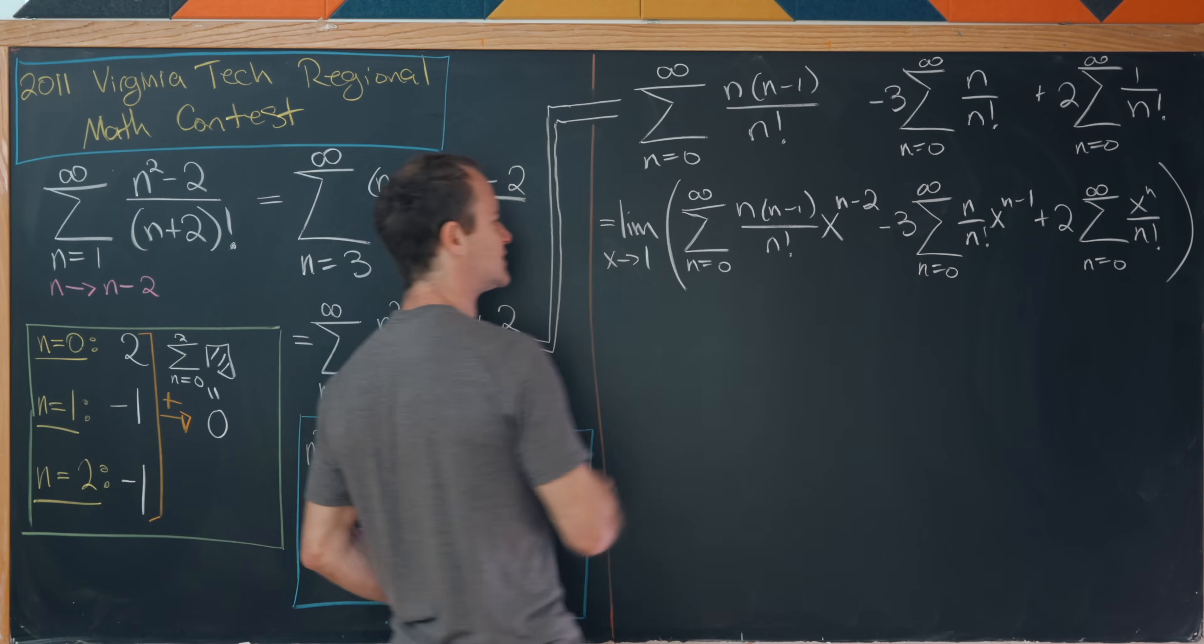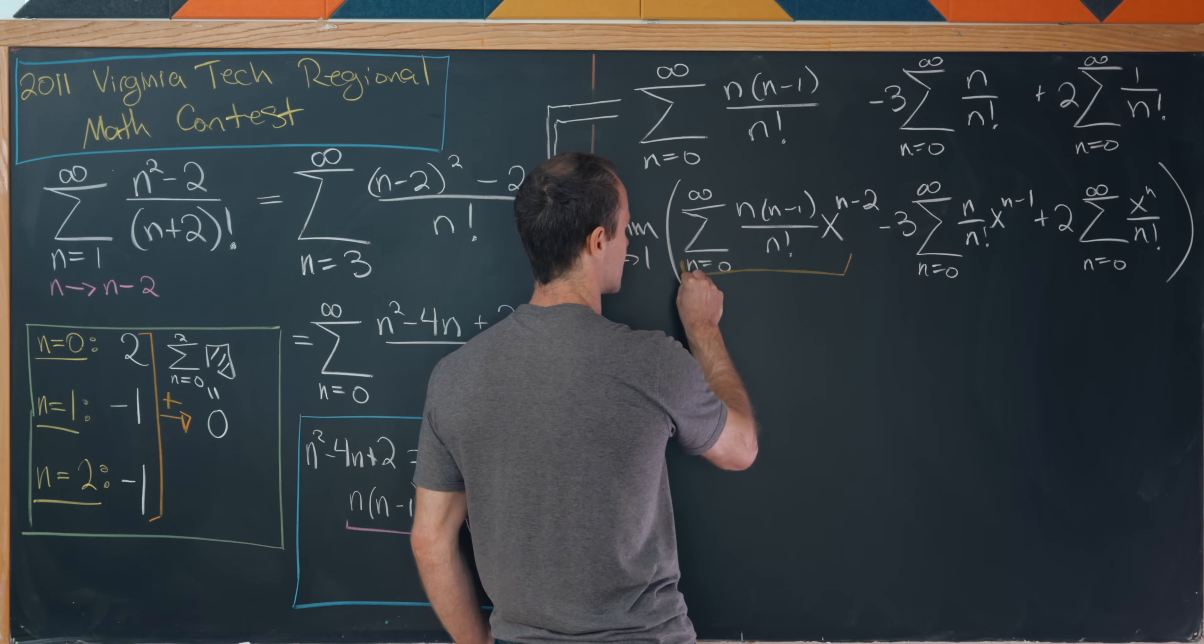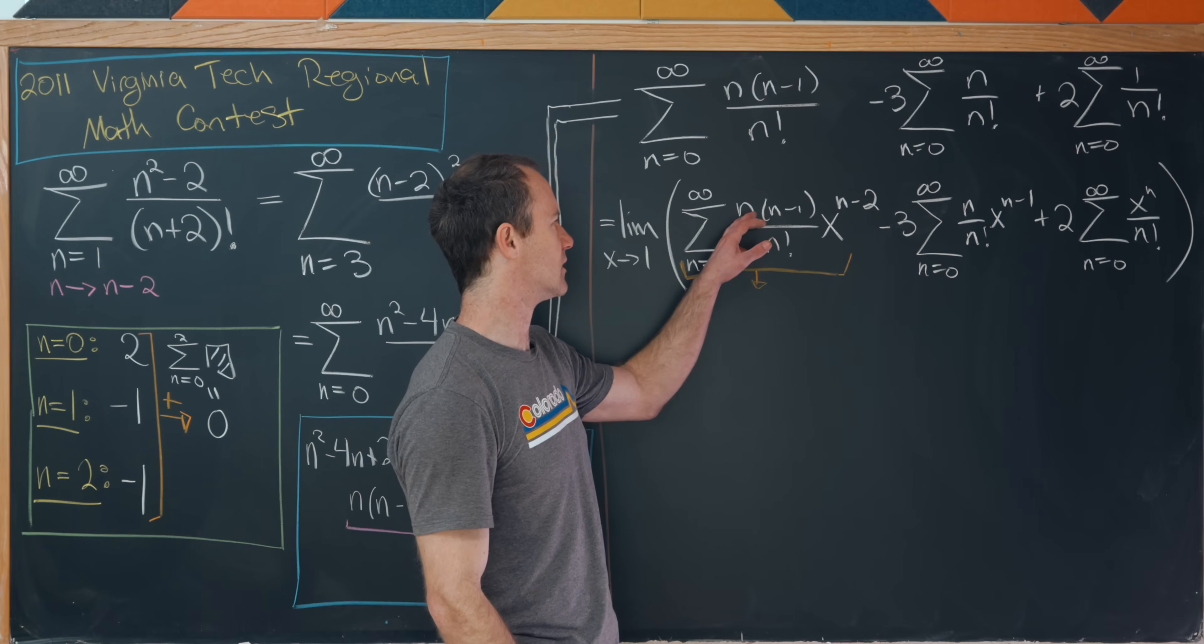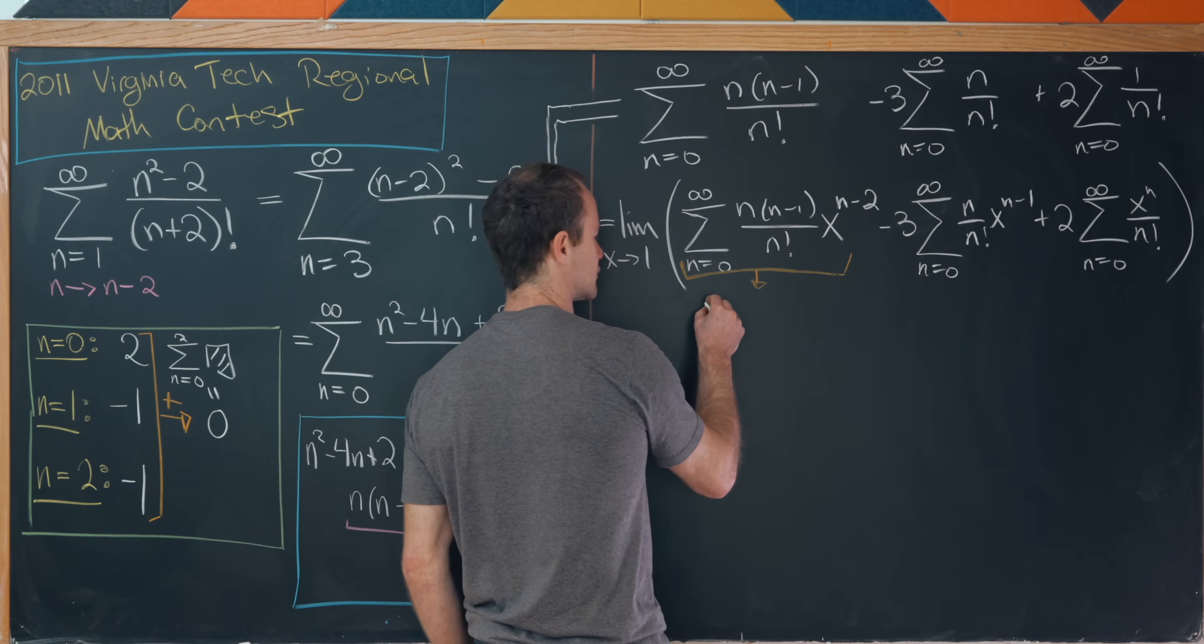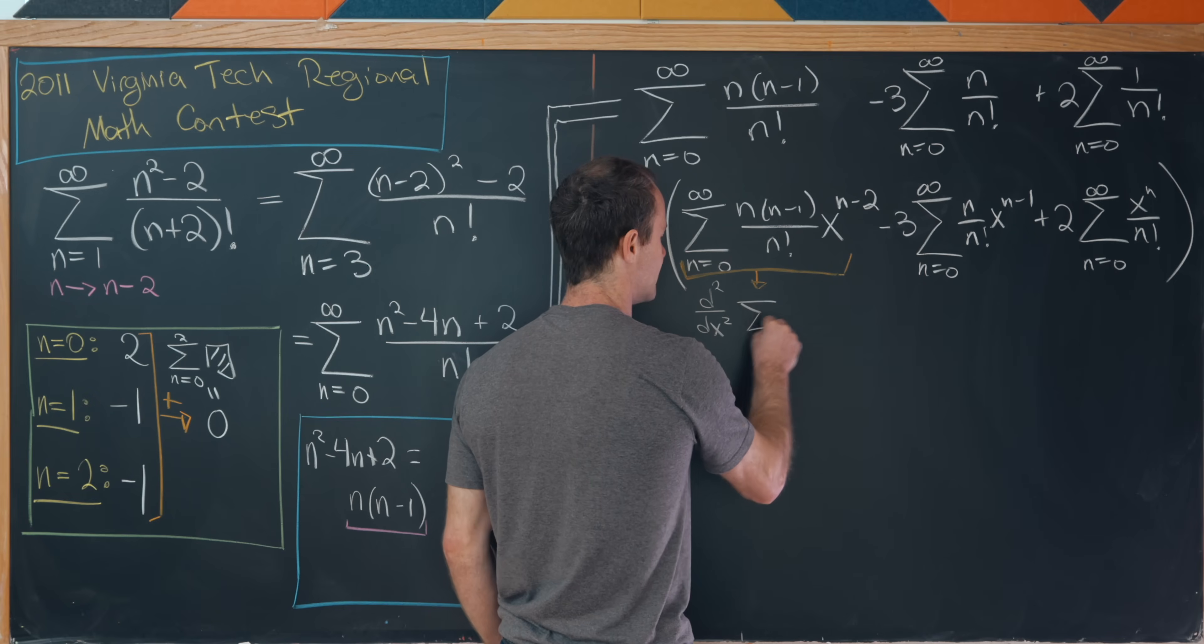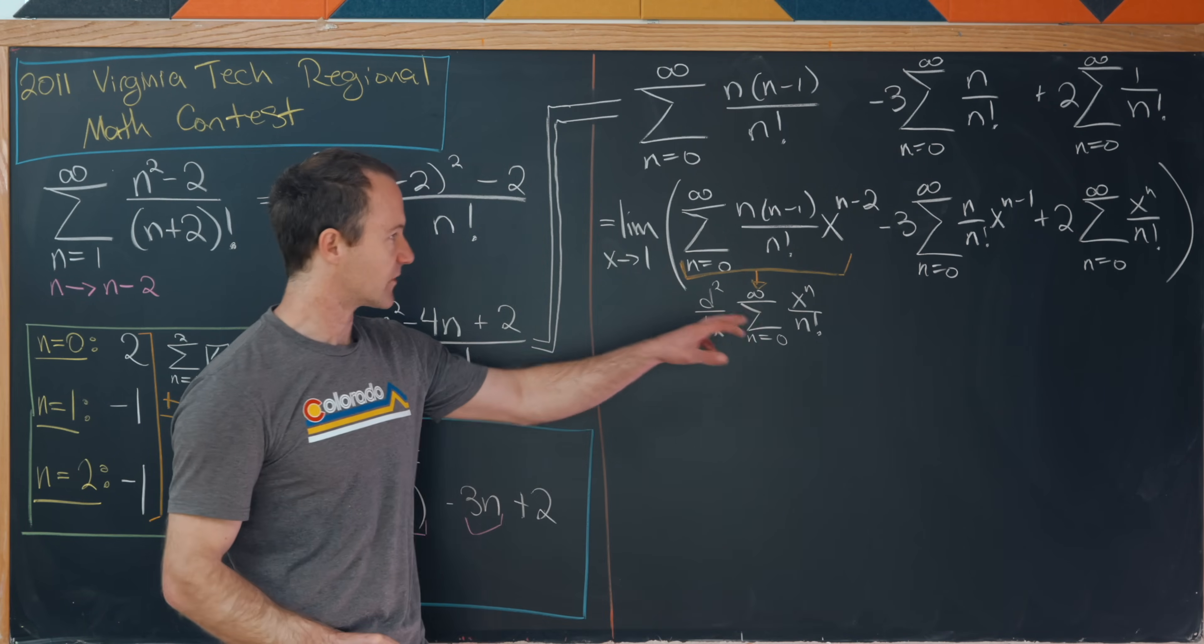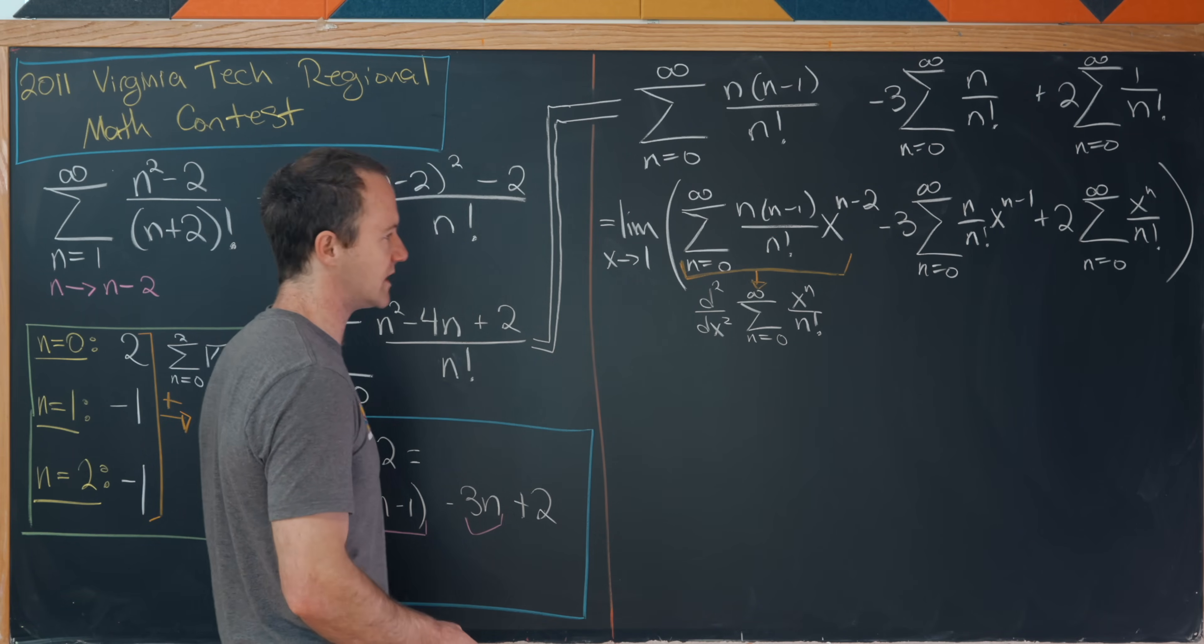And now let's look at these two kind of intermediate sums, maybe this first one and this second one. Let's see if we can rewrite those as something that's a little bit more familiar. So notice this x to the n minus two along with this n times n minus one gives us motivation to view that as a second derivative. So this is in fact the second derivative of the power series which is the sum as n goes from zero to infinity of x to the n over n factorial. So the first derivative will bring the n down and the second derivative will bring the n minus one down.